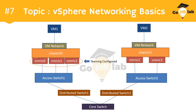In question number seven, we have VM one connected to the VM network port group of virtual switch zero. This vSwitch has three different uplinks: VMNIC zero, VMNIC one, and VMNIC two. One difference from question six is that in the previous question our virtual switch had only two uplinks — VMNIC zero and VMNIC one — whereas in question number seven, our virtual switch has three different uplinks: VMNIC zero, VMNIC one, and VMNIC two. All three uplinks are connected to a common switch named access switch one.